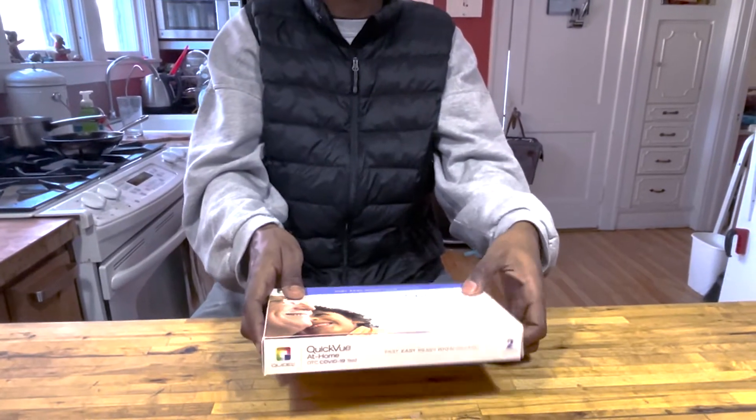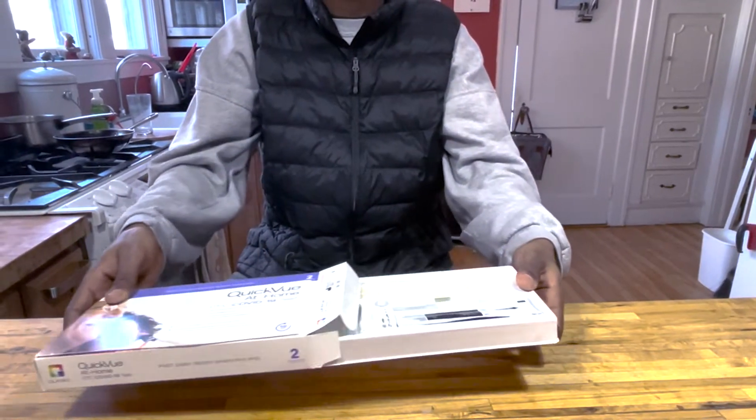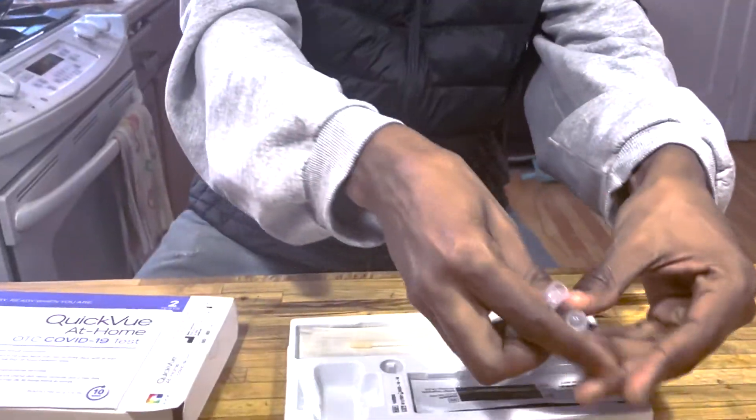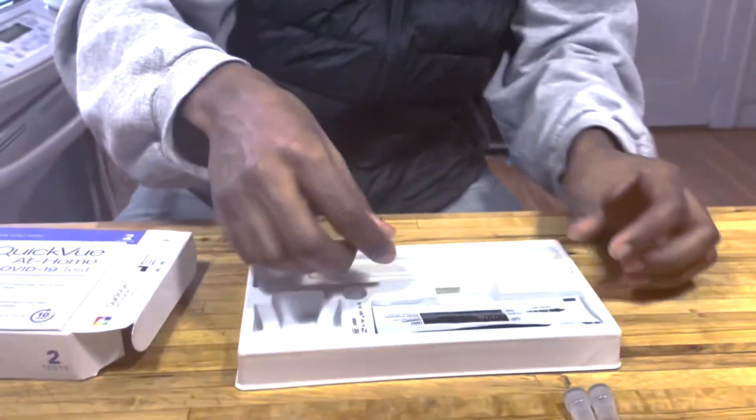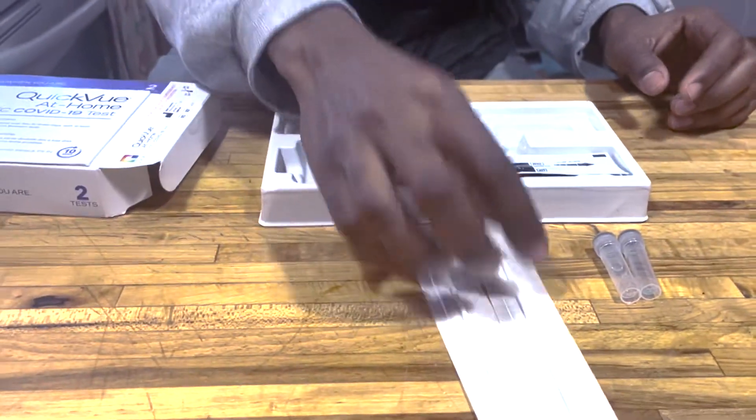Open the box. Your test kit contains two tests. There will be two tubes, two swabs, and two test strips.